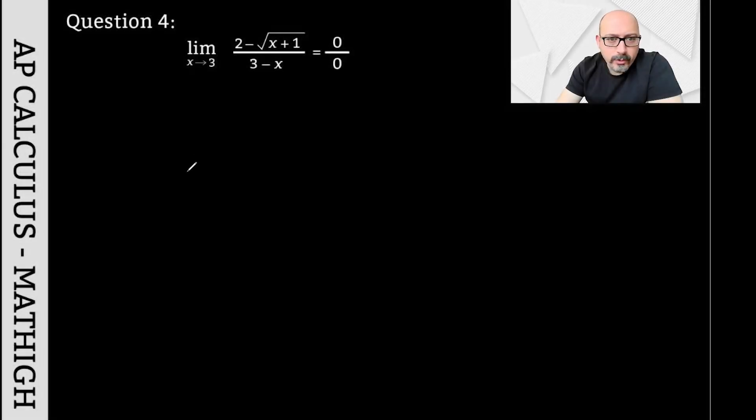The fourth question is about the limit as x approaches 3, given as (2 - √(x+1)) over (3-x). If you substitute 3 for x, you get 2 minus the square root of 4, which equals 2, so you find 0 on top, and 0 below from 3 minus 3. In this question, it's not possible to directly factor. That's why when you encounter a question like this, it's best to start by calling the radical expression u.